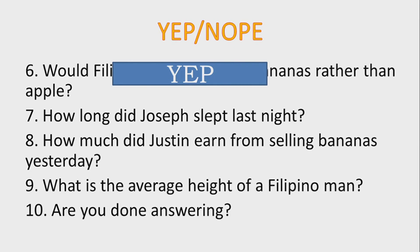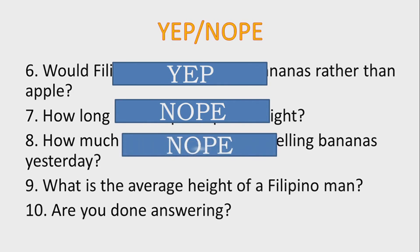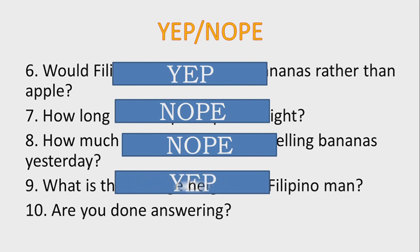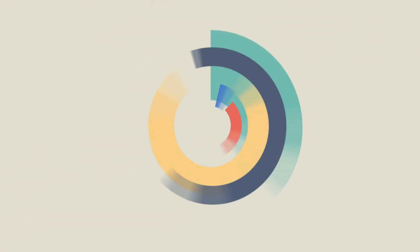Number seven: How long did Joseph sleep last night? Answer: Nope — we could just ask him. Number eight: How much did Justin earn from selling bananas yesterday? Answer: Nope — just ask Justin. Number nine: What is the average height of a Filipino man? Of course, we do need a statistical tool to answer this question. And number ten: Are you done answering? Answer: Nope — because you could just say yes or no. That's our lesson for today, this has been Teacher Dal signing off!